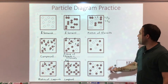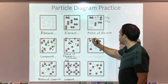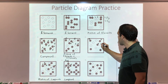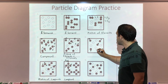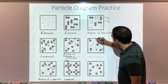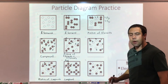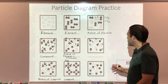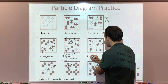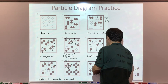For problem eight, a little bit easier — we have a bunch of A's floating around and a bunch of B's floating around. They're mixed together, they're all elements, so once again we have a mixture of elements.